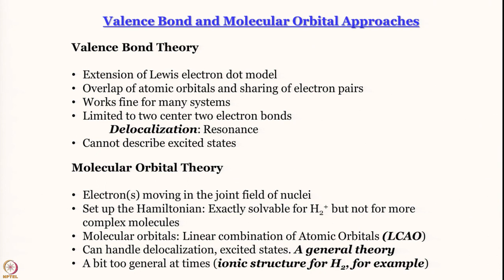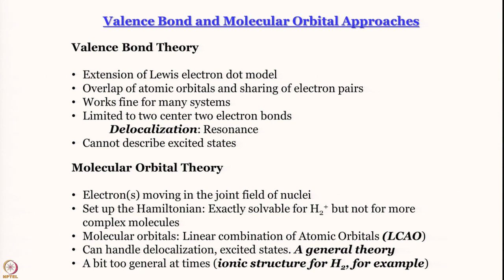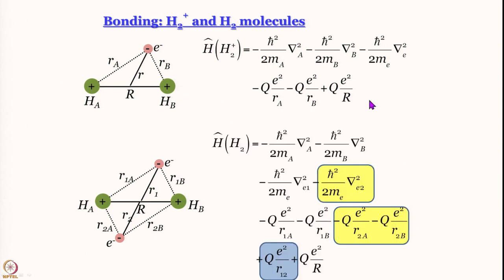What is the simplest molecule that has only one electron, and that therefore cannot be handled by valence bond theory in the first place? That molecule would be H2+. A few lectures ago we showed you the Hamiltonian for H2+ as well as H2. There are more terms as you go from hydrogen atom to H2+ to H2 — the number of terms keeps increasing as different interactions come in.